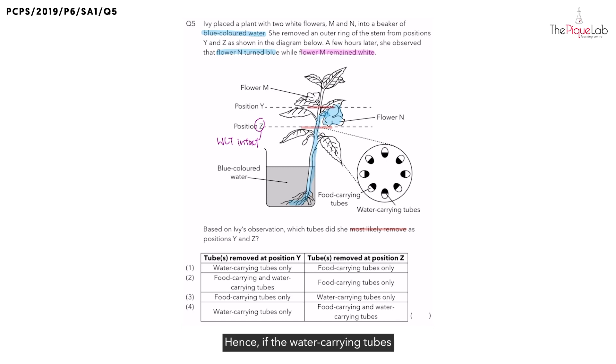Hence, if the water carrying tubes at position Y was removed, what can we say about the food carrying tubes? Are we able to remove only the water carrying tubes while keeping the food carrying tubes intact?